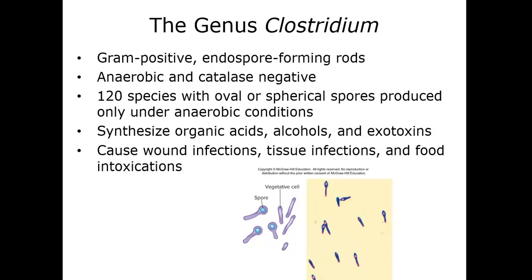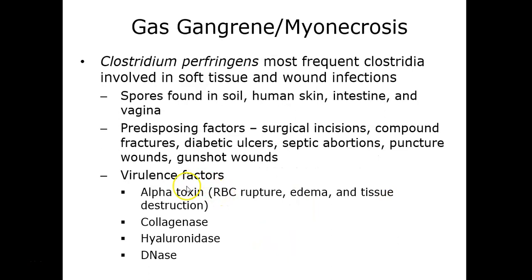Moving into probably the biggest genera in this chapter: Clostridium. Also gram-positive and able to form endospores, the key difference from Bacillus is that Clostridium are obligate anaerobes, and most have terminally located spores at one end or pole of the cell. They cause wound infections, tissue infections, and food-borne intoxications. We'll cover Clostridium botulinum as well as Clostridium perfringens, which causes gas gangrene but can also produce an enterotoxin.